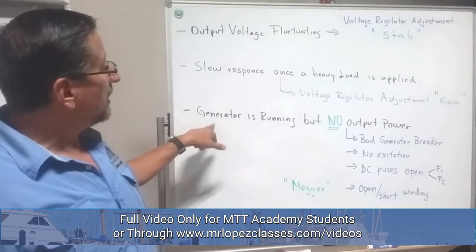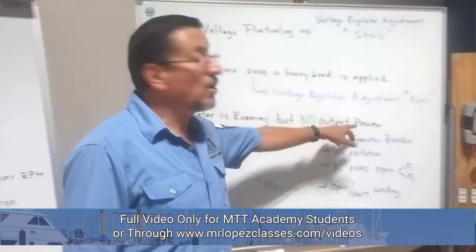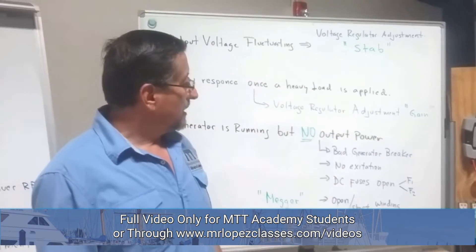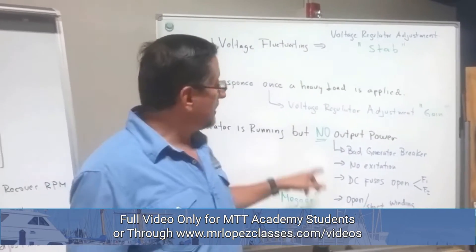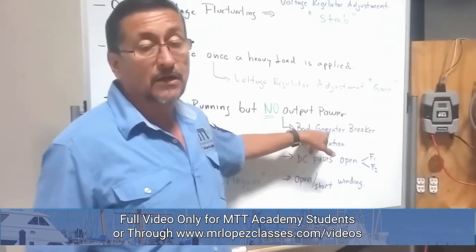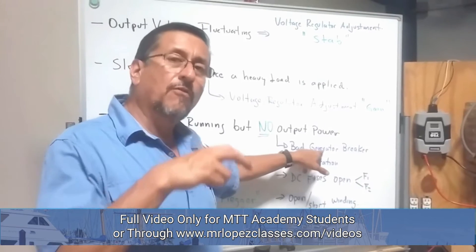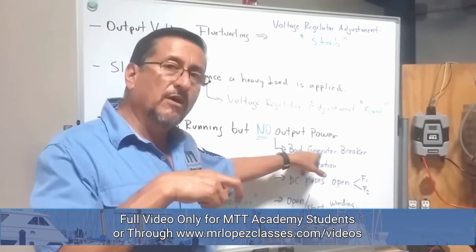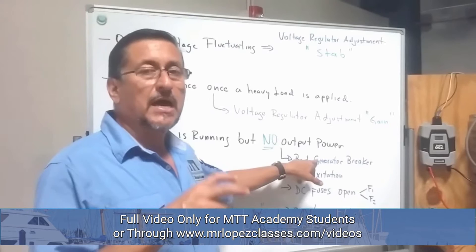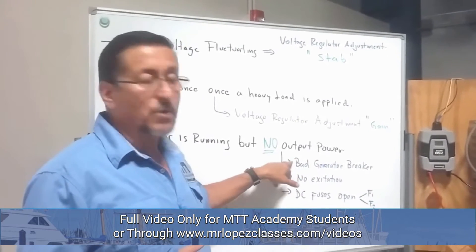The last issue is when the generator is running but there is no output power. The most common possibility is that the breaker on the generator is bad. You need to verify the voltage at the input of the breaker. If the voltage at the input of the breaker is good and there is nothing at the output, the breaker is probably broken.